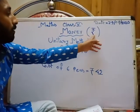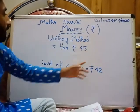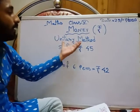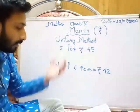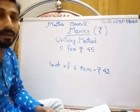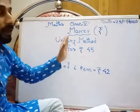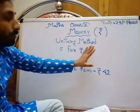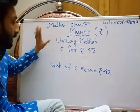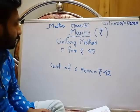This is the symbol of our rupee. First we will learn how to calculate cost by the unitary method — how to find the cost of unit things.